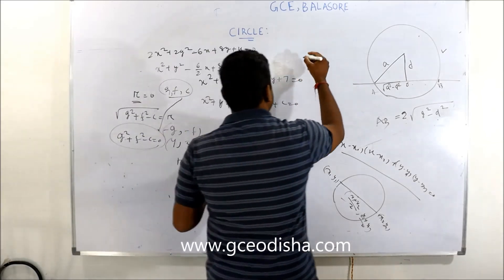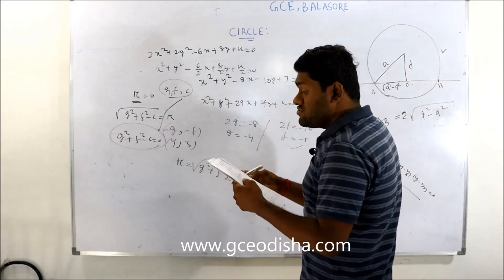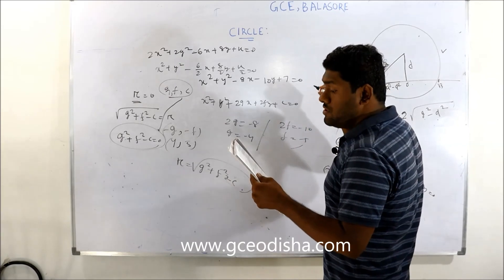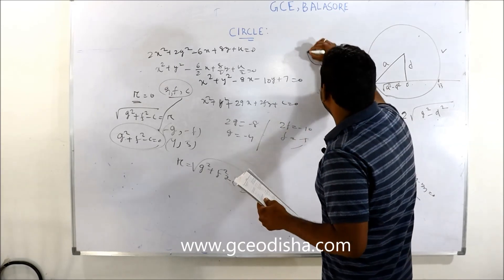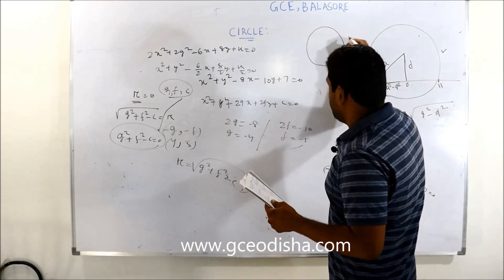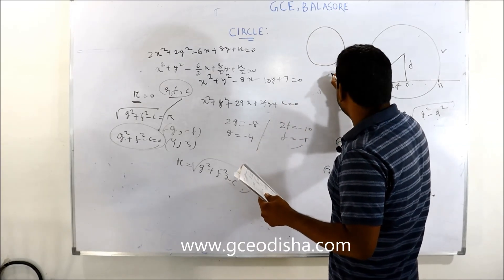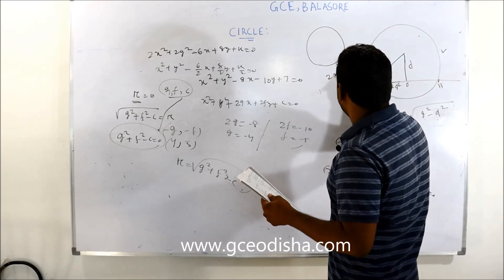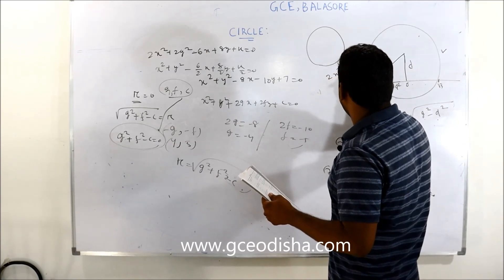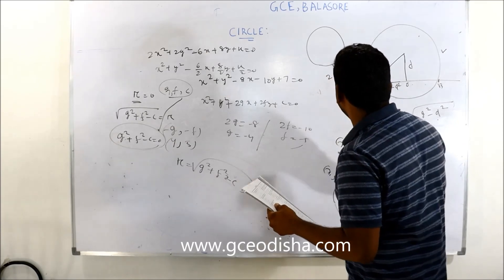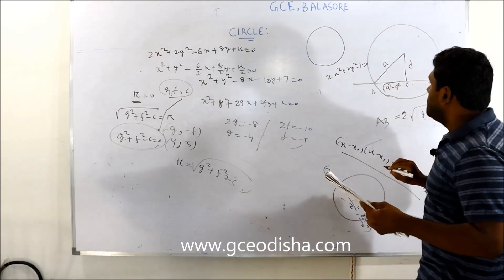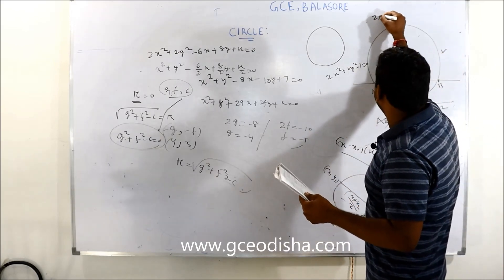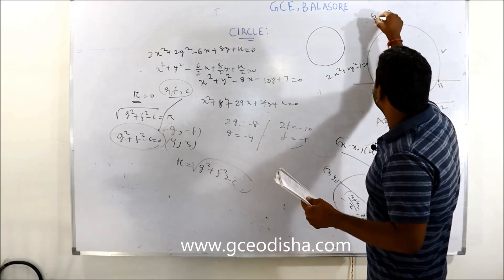Another question asks for the length of the tangent from the point (2, -3) to the circle 2x² + 2y² - 1 = 0. Use S1 by substituting x1 = 2, y1 = -3 into the circle equation, then the length of the tangent PT = √S1.